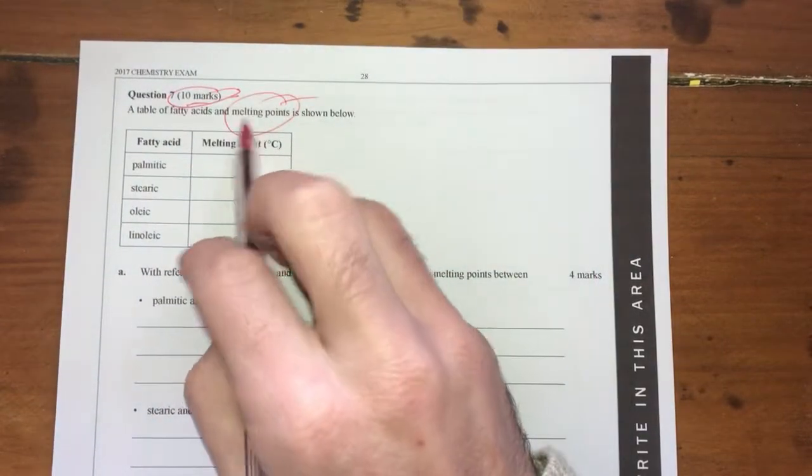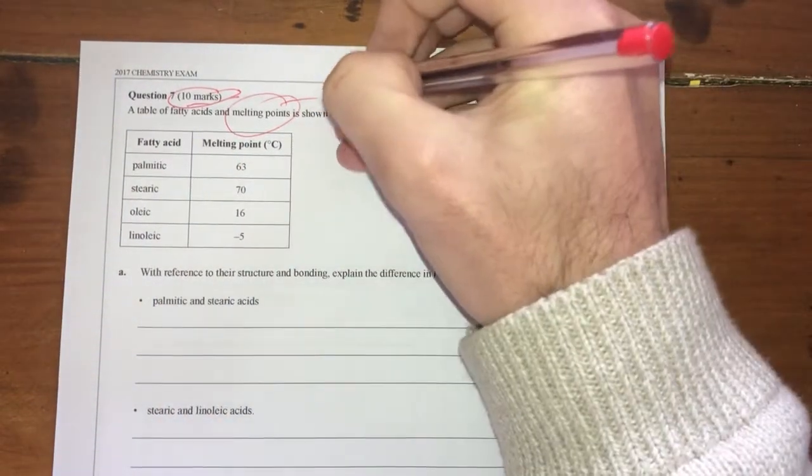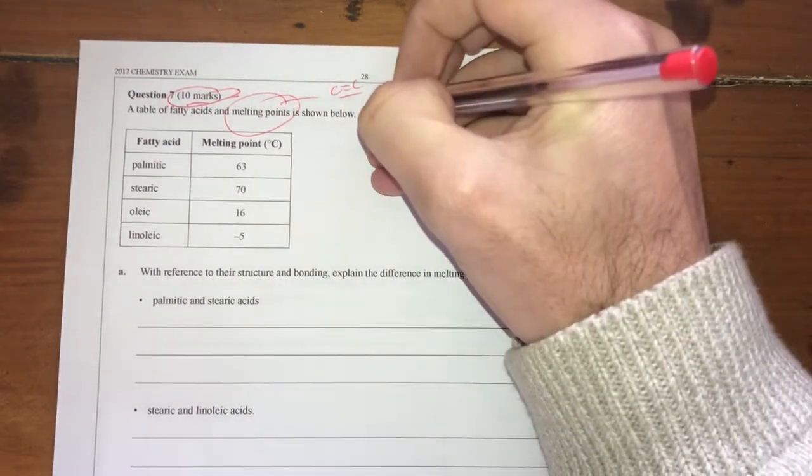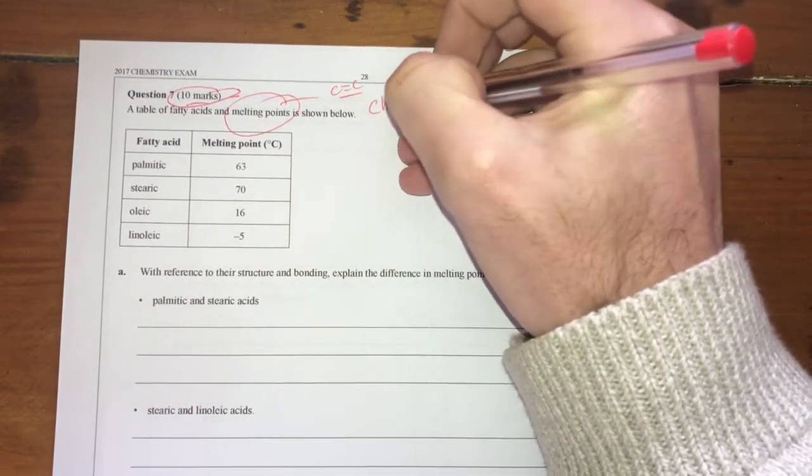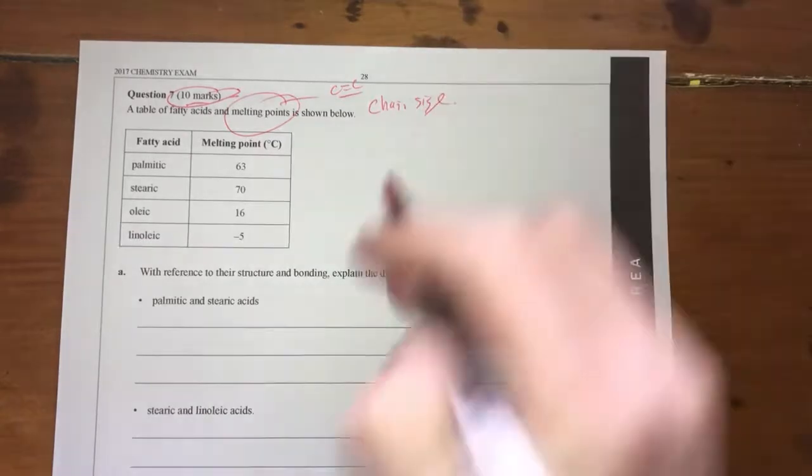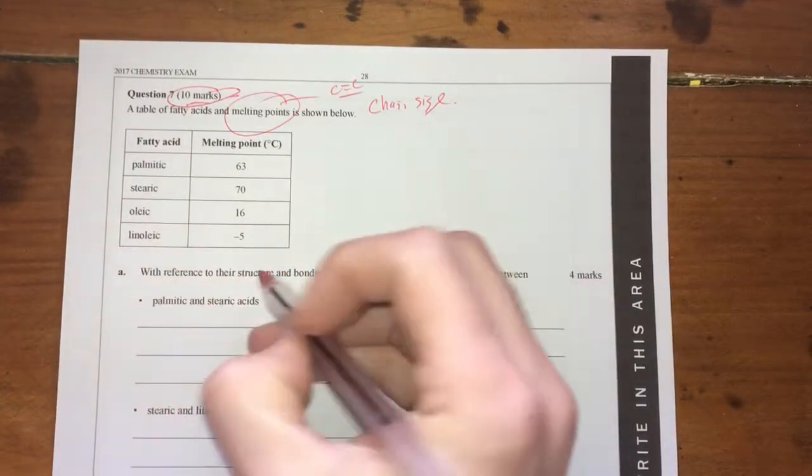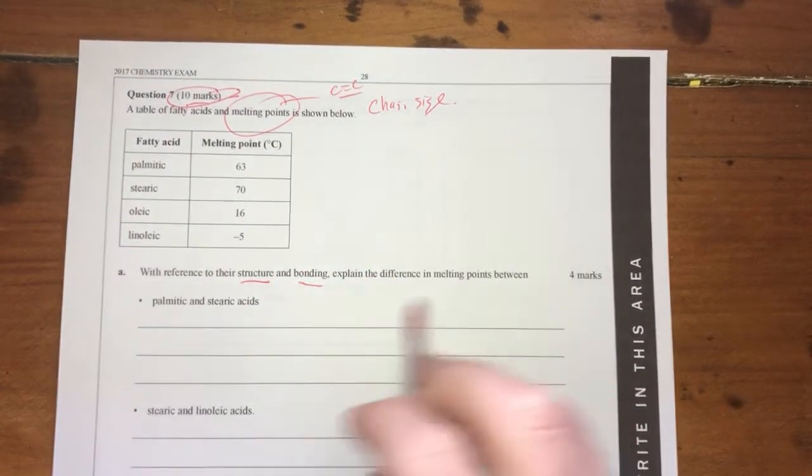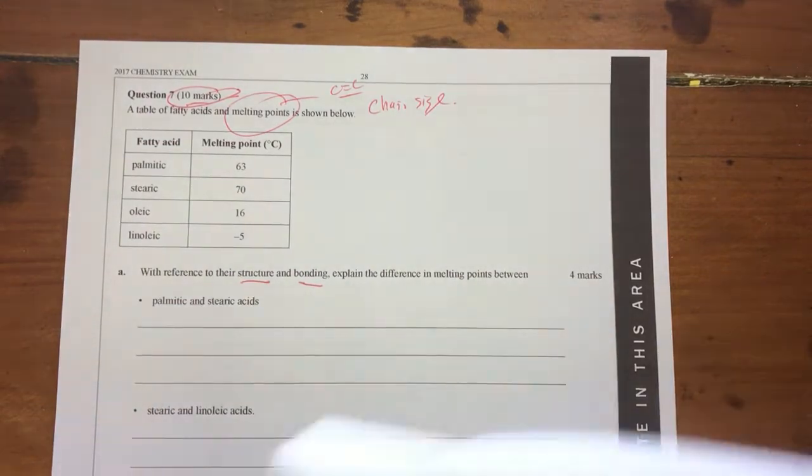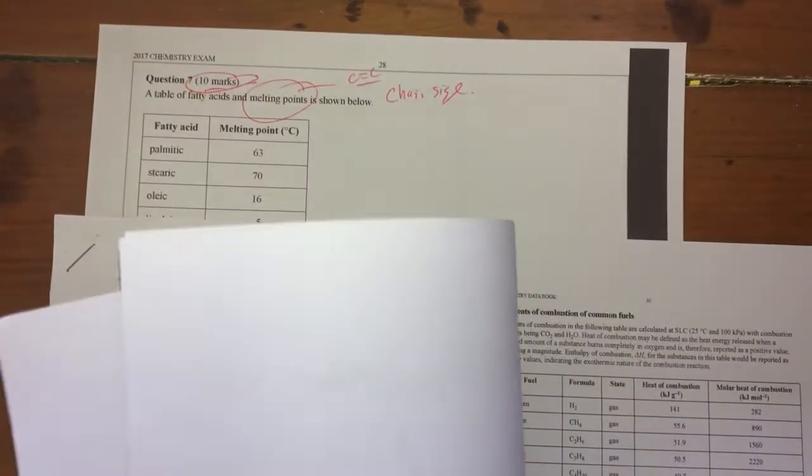Table of fatty acids and melting points are shown below. Just knowing that we're dealing with melting points of fatty acids, I'm thinking about carbon to carbon double bonds and carbon chain size. With reference to their structure and bonding, explain the difference in melting points between these fatty acids. So I'm going to go to my data booklet.